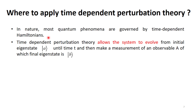Time-dependent perturbation theory is most useful for studying processes of absorption and emission of radiation by atoms, or more generally for treating the transition of quantum systems from one energy level to another. It allows the system to evolve from an initial eigenstate until time t, and then make a measurement of observable A, whose final eigenstate is some state B. This brings us to the second part of the lecture: supplementary terms.